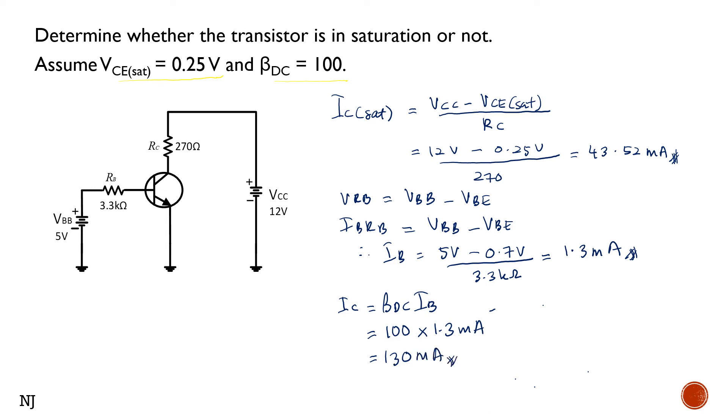We can see that the IC here is larger than the IC saturation, isn't it? So what does it mean? When the IC value is larger than the IC saturation, it means that the transistor is saturated.